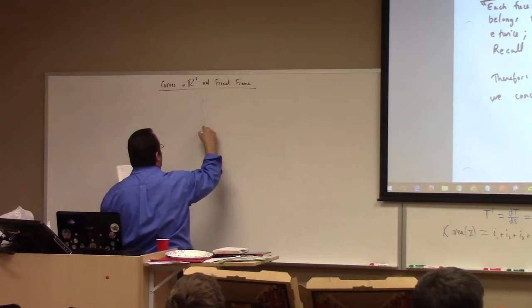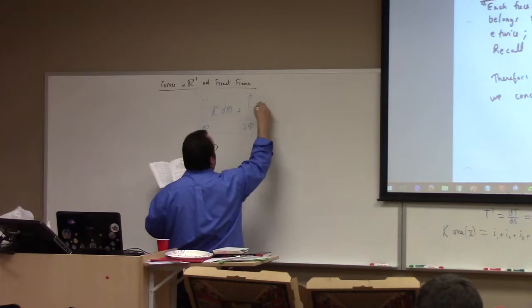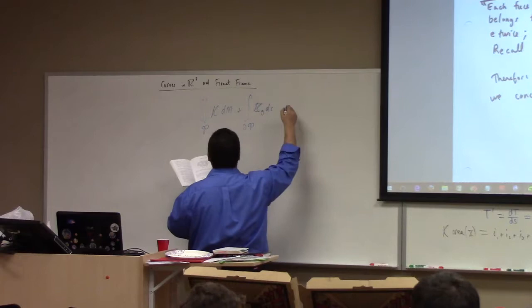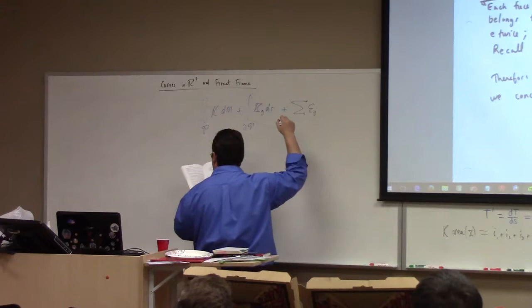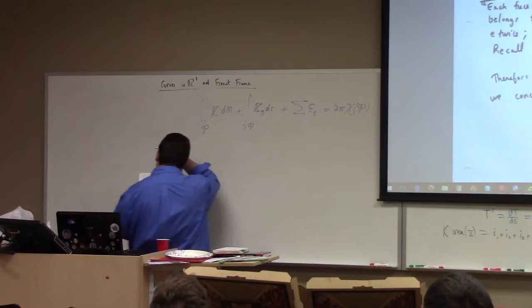You can prove that for a polygon, the integral of K dM over the polygon, plus the integral of the geodesic curvature over the boundary, plus the sum of the exterior angles over the polygonal region, equals 2 pi times the Euler characteristic of the polygonal region of the geometric surface.